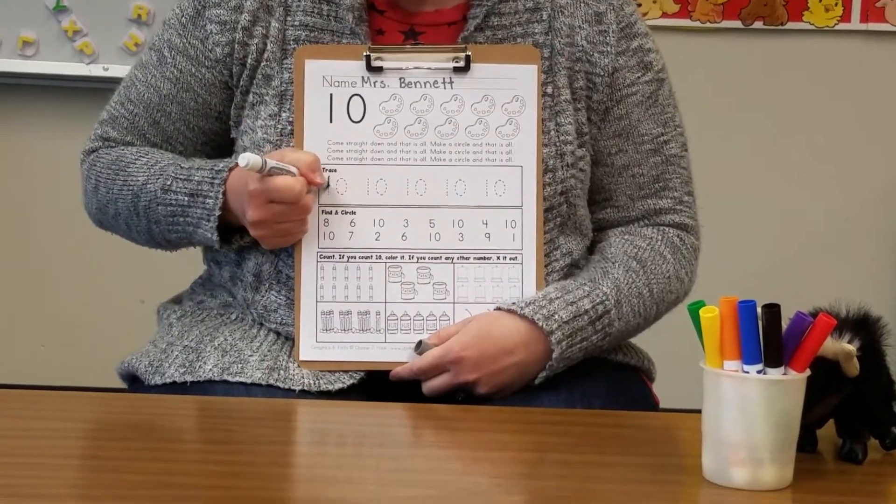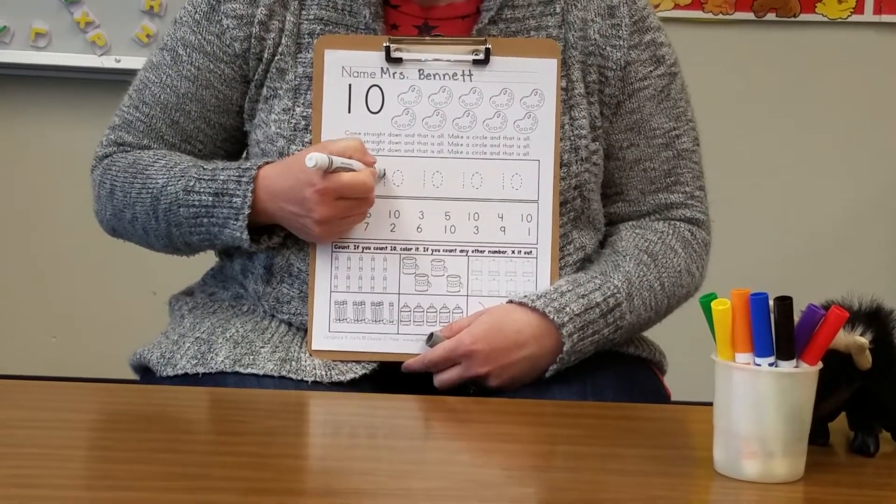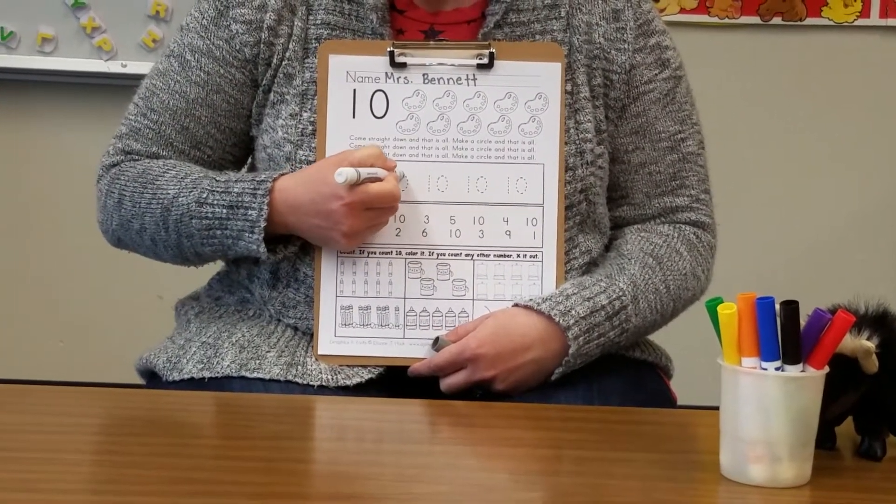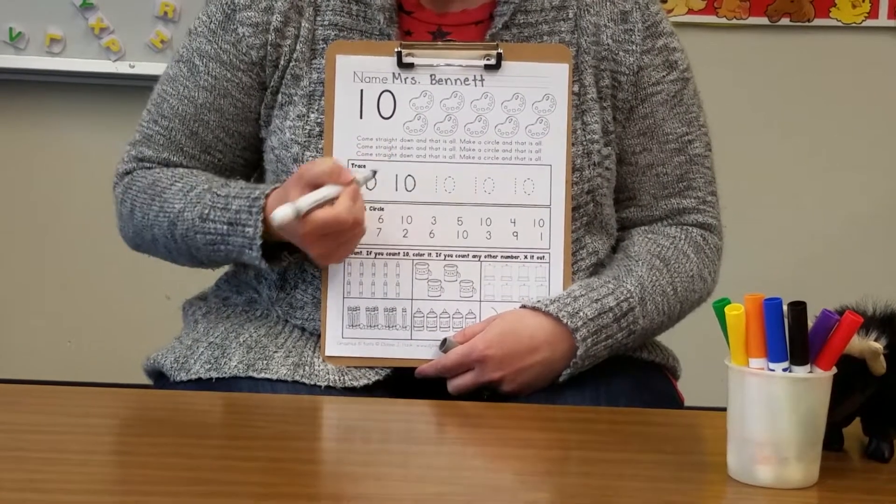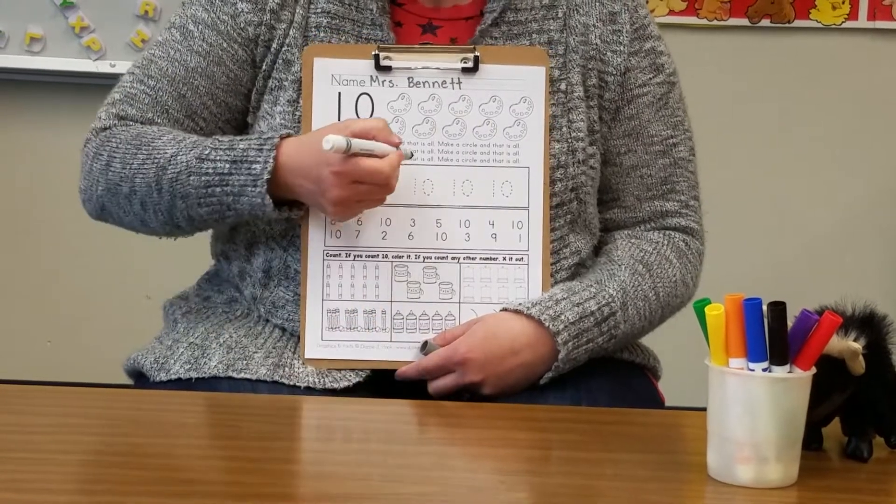Come straight down and that is all. Make a circle and that is all. Come straight down and that is all. Make a circle and that is all. Keep going until you've traced all the number 10s.